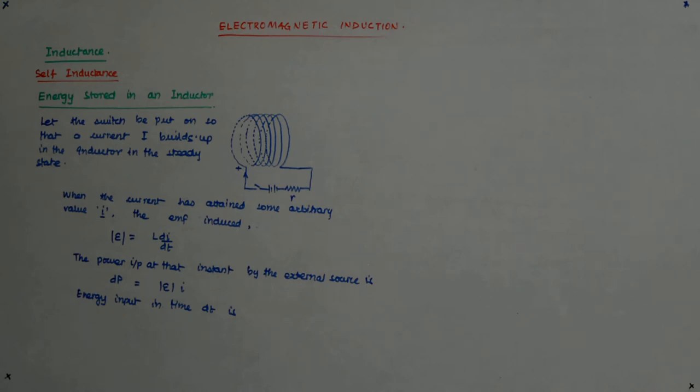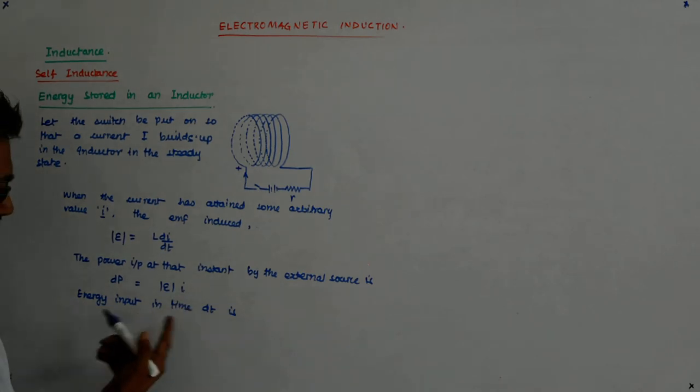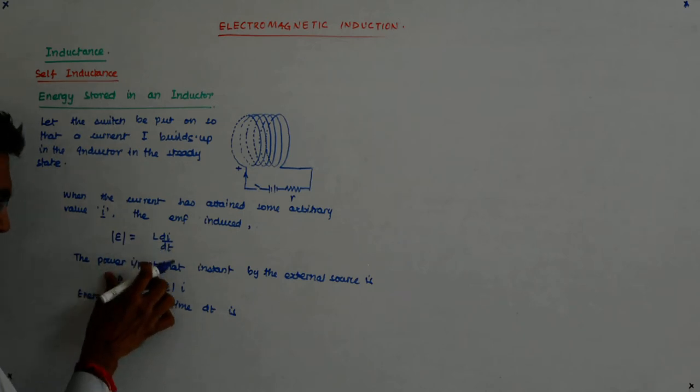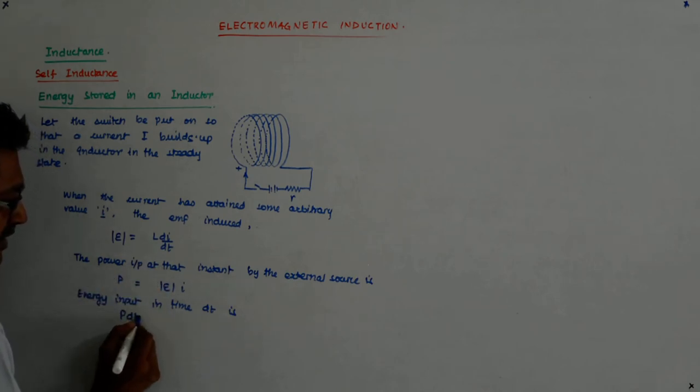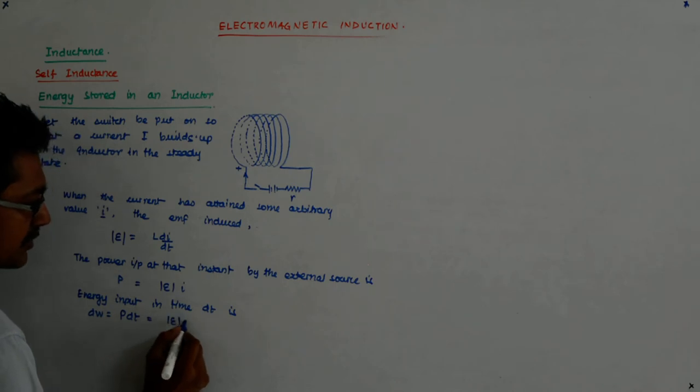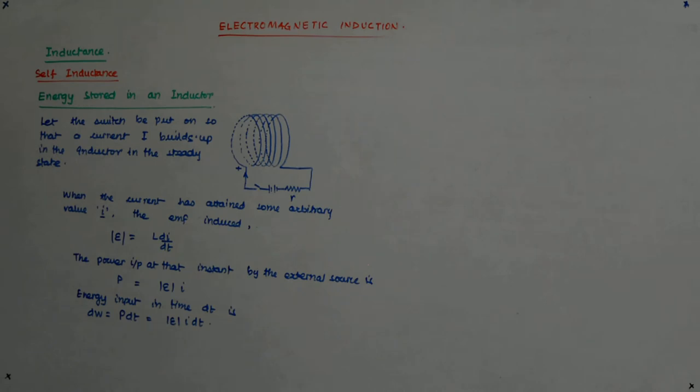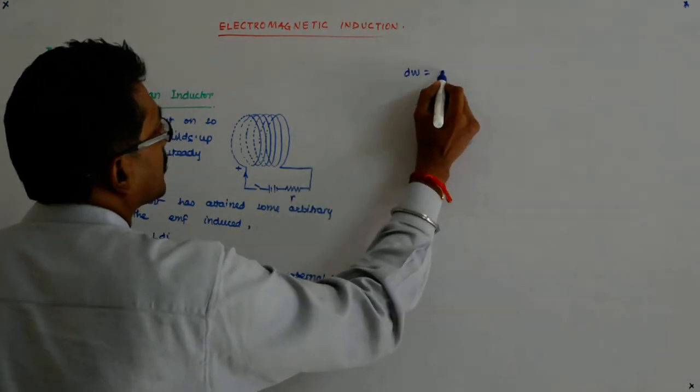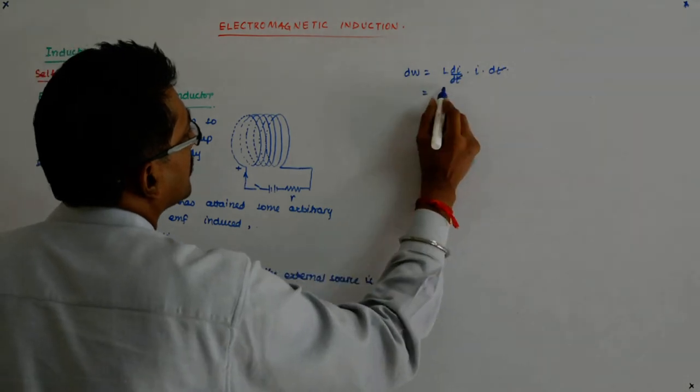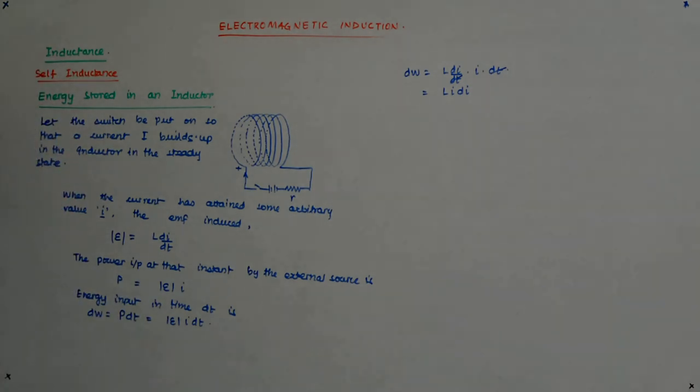So the power input at that instant by the external source, this is input. What is the energy input in time DT? What is the energy input in that time? In that small fraction of time where my E also does not change and my I also does not change, it is P only. Call it P. It is P DT. That is my dW. That is the small amount of work that you have done. dW is equal to P DT and that becomes IDT. Now, what is that equal to? dW is equal to LDI upon DT into I into DT, which is equal to LIDI.